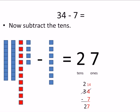We took that 10 and we gave it to the ones. So instead of 4, we have 14. So then we do 14 minus 7 equals 7. And 2 minus nothing equals 2.